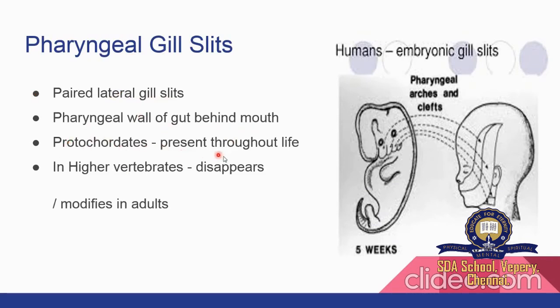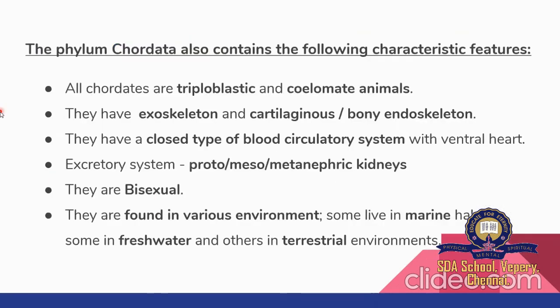In protochordates, gill slits are present throughout life; in higher vertebrates they disappear or are modified in adults. Additional chordate characteristics include: all are triploblastic and coelomate; they have an exoskeleton and cartilaginous or bony endoskeleton; a closed blood circulatory system with a ventral heart; excretory system with proto-, meso-, and metanephric kidneys; they are bisexual; and are found in marine, freshwater, and terrestrial environments.